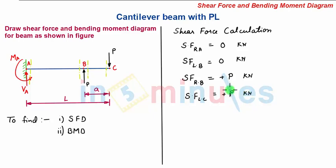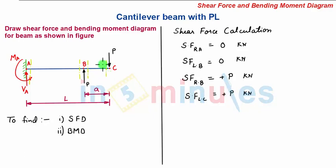This can also be evaluated by considering the right hand side of the section. On the right hand side there is only one force P acting downward, and a downward force on the right hand side is also positive. So the value of shear force at this section remains the same whether we consider the left or right hand side. We have now calculated shear force at all the salient points and can plot the shear force diagram.